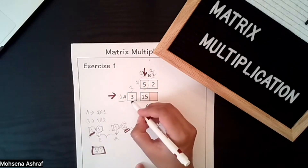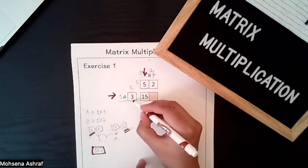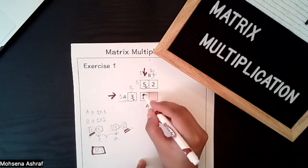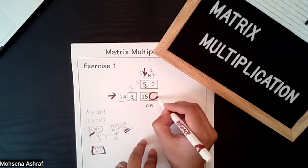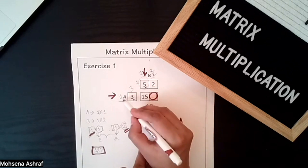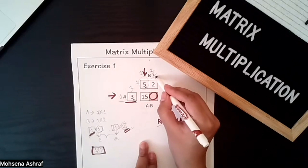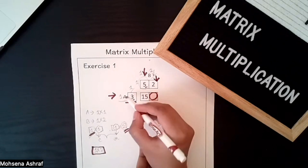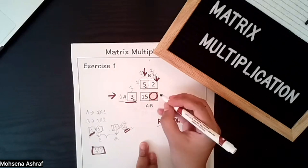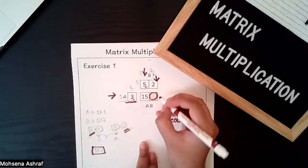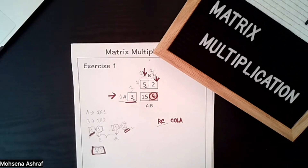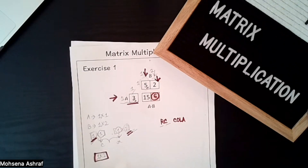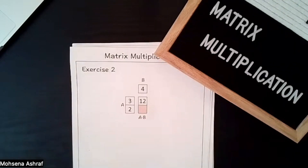So we multiply 3×5, we get 15. And for the next field, we have to multiply this row with this column. So we multiply 3×2, which gives us 6. So we get the result as [15, 6]. Now let's move on to the second exercise.